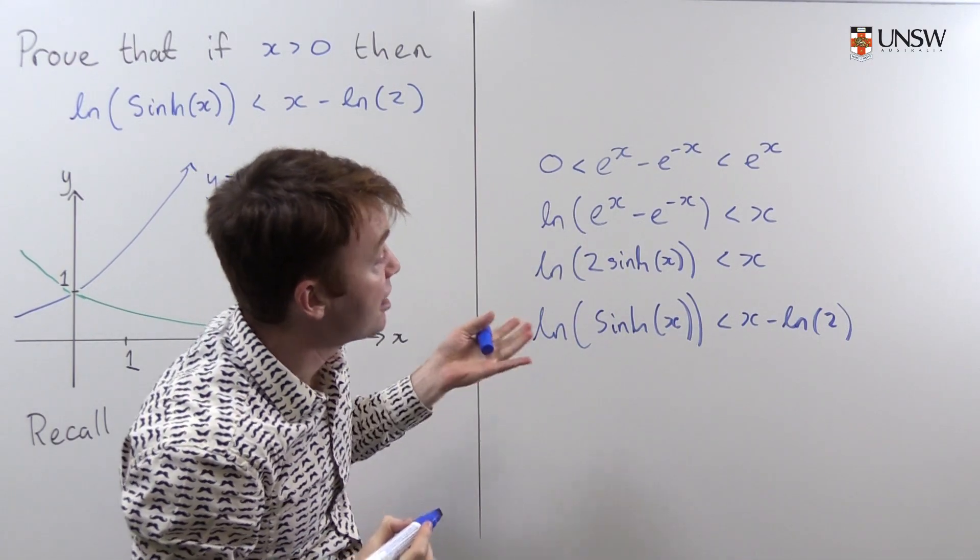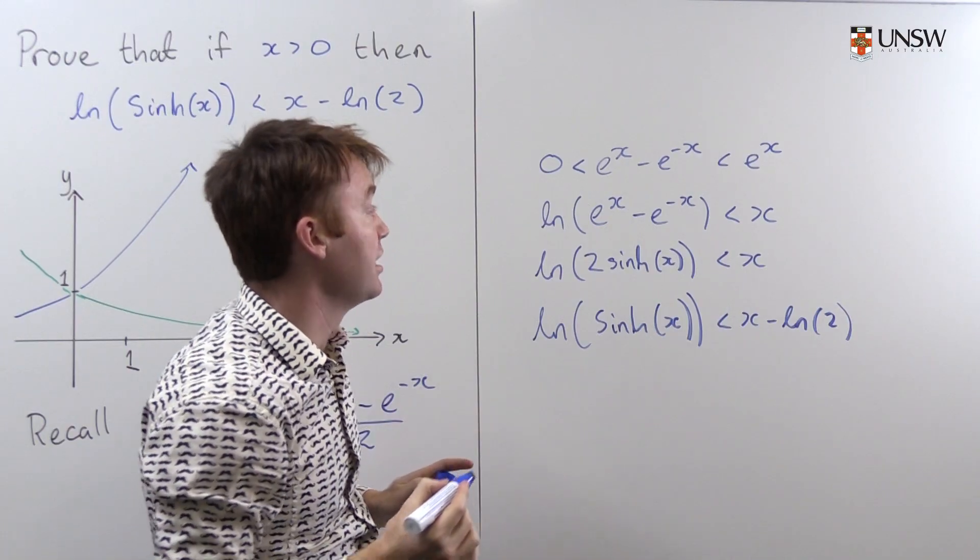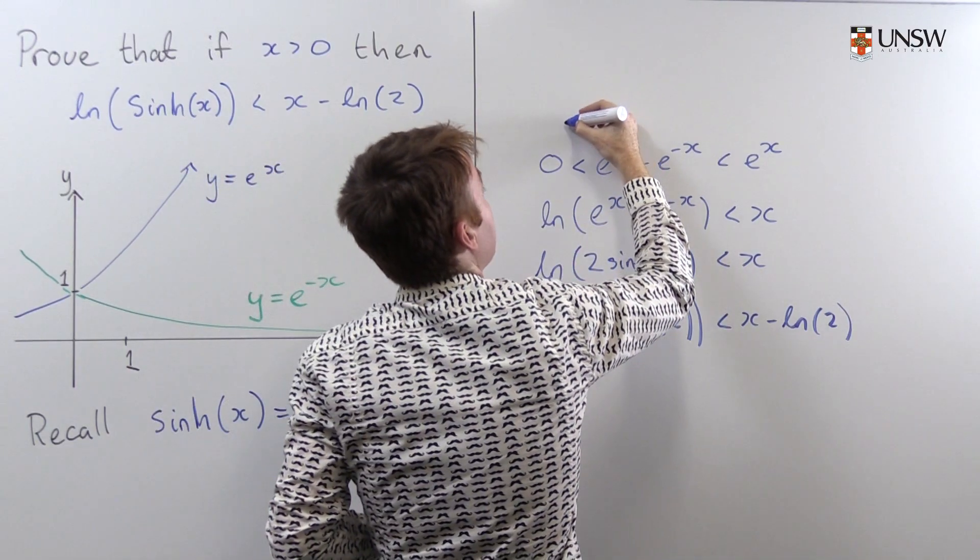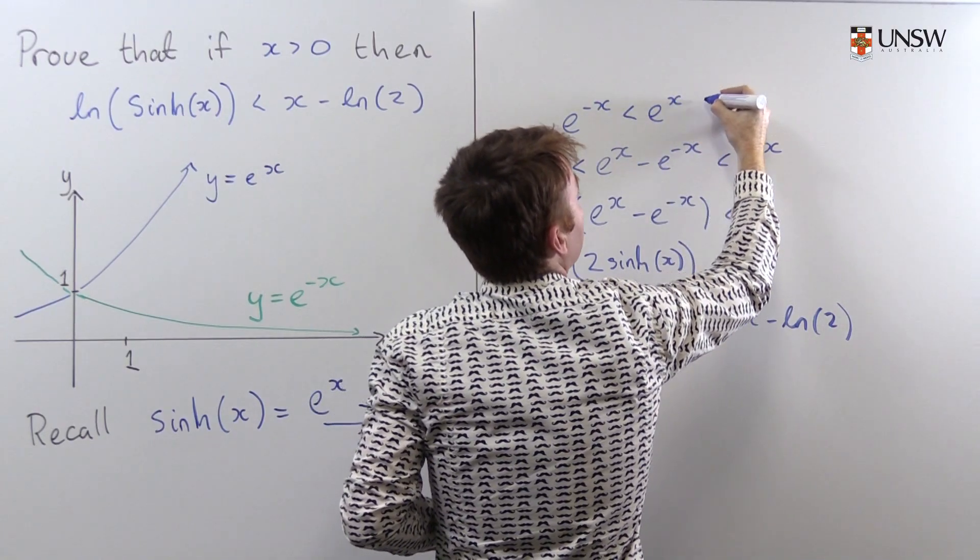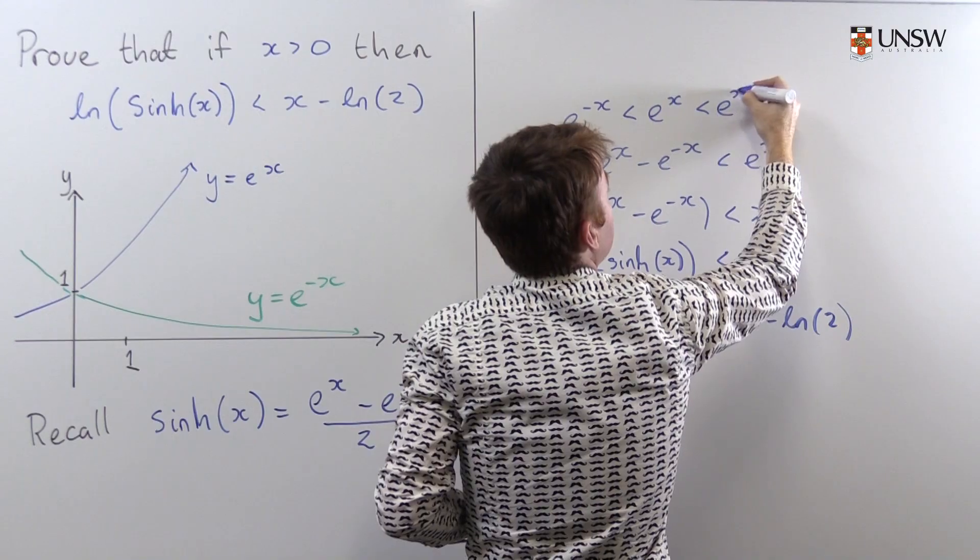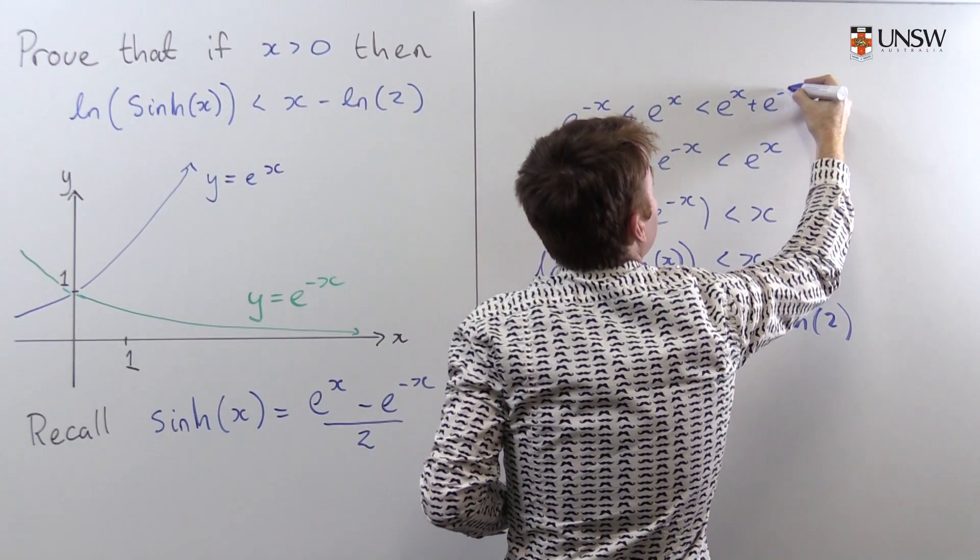And now I could add e to the negative x to both sides. So I could say e to the negative x is less than e to the x which is less than e to the x plus e to the negative x.